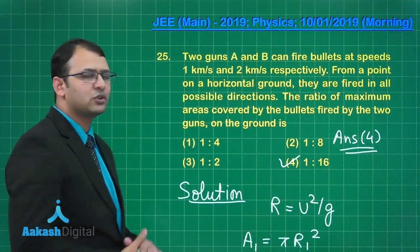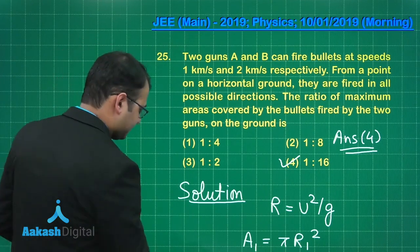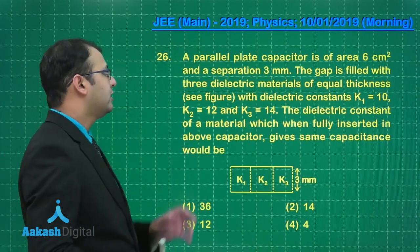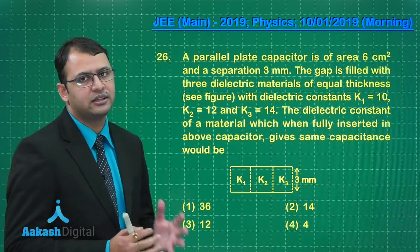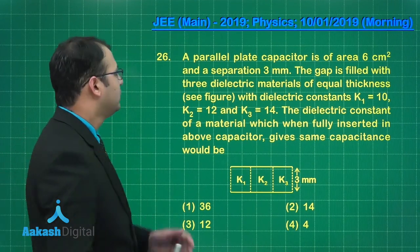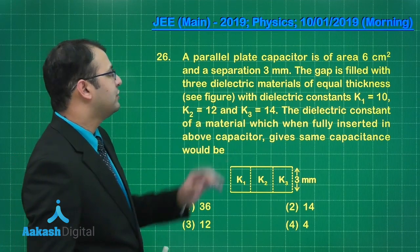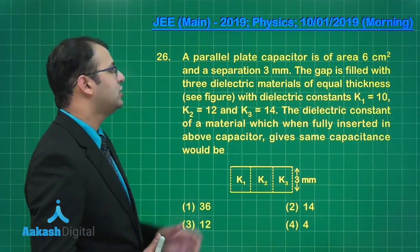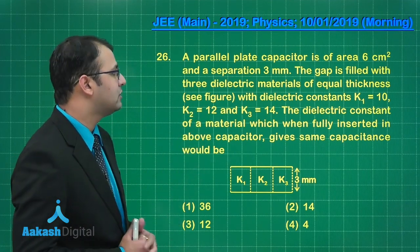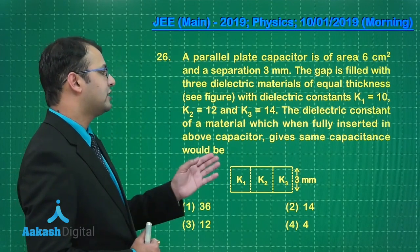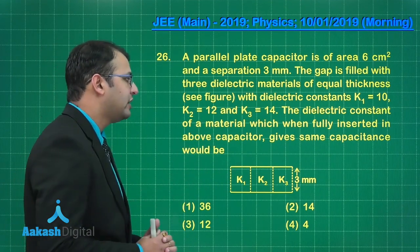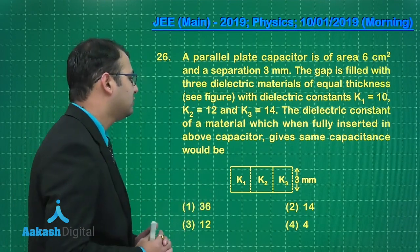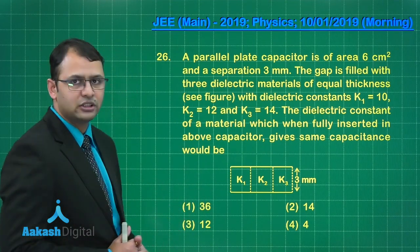Let's move on to next question, that is question number 26. Now here parallel plate capacitor, this belongs to the section of electrostatics, that is electromagnetism. So parallel plate capacitor is of area 6 centimeters square and has separation of 3 mm. The gap is filled with 3 dielectric materials of equal thickness with dielectric constants 10, 12 and 14. The dielectric constant of material which when fully inserted above capacitor gives same capacitance would be.